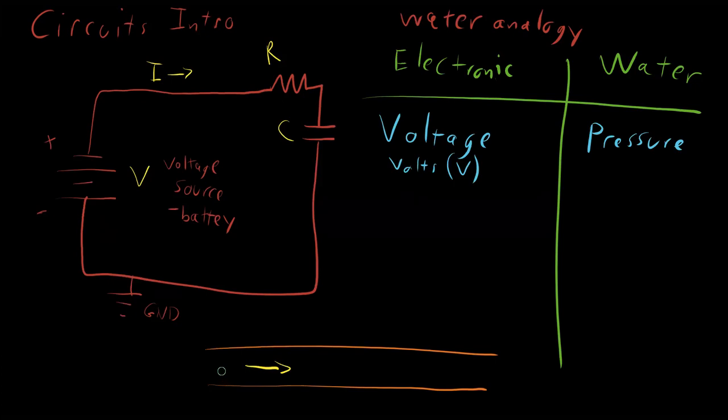Voltage is just how charged, how powerful, how energized the electrons that are flowing through the circuit are. And that's a direct analog mathematically to the pressure that is behind the pipe that's causing water to flow.